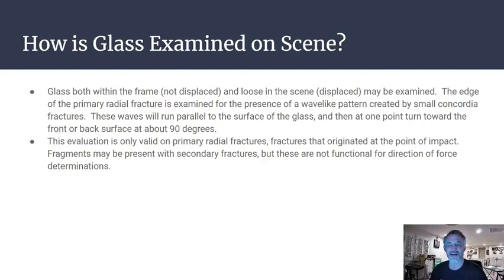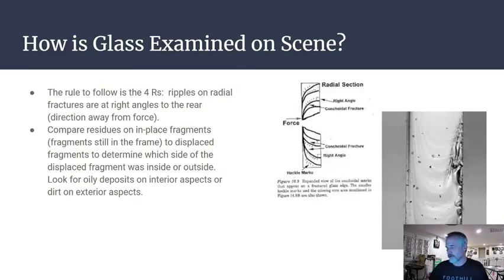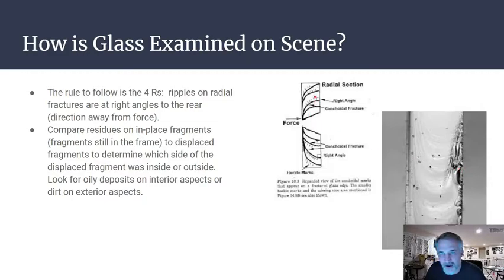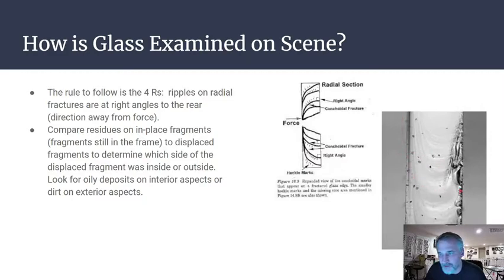The four R's rule helps remember how to interpret fractures: ripples on radial fractures are at right angles to the rear — meaning the direction away from the force. The right angles appear on the side opposite to where the force was applied. Looking at the edge of a piece of glass, you can see these ripple lines that then turn at right angles — the force came from the opposite side of that right angle.